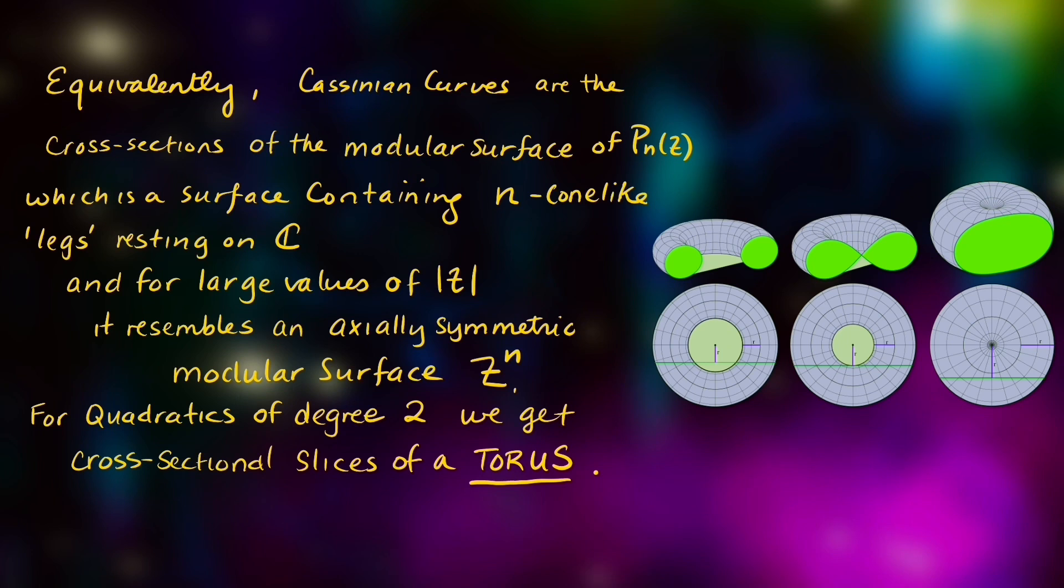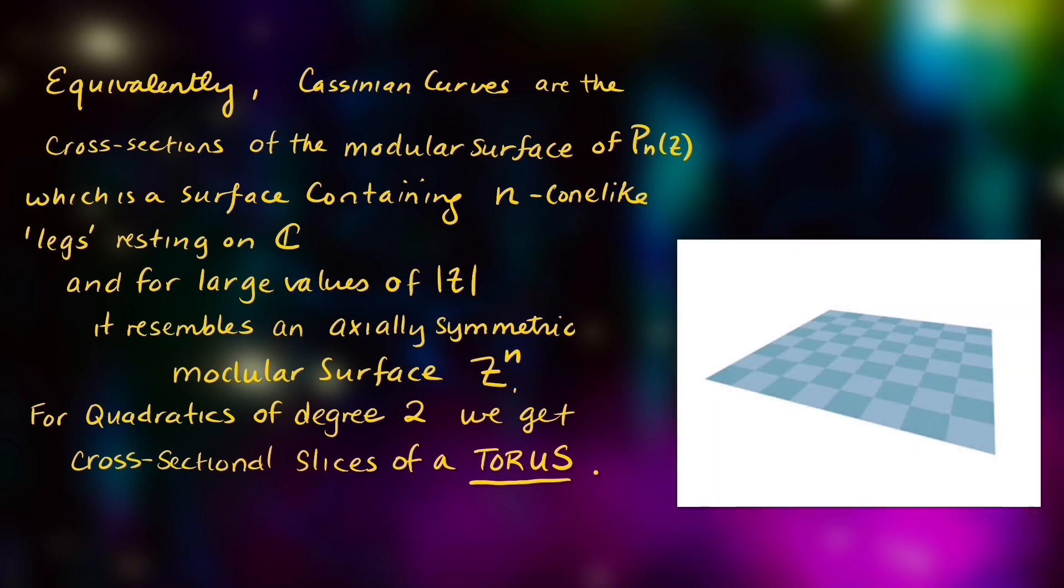Equivalently, Cassinian curves are the cross-sections of modular surfaces p of z, which is a surface containing n cone-like legs resting on the complex plane, and for large values of z it resembles an axial-symmetric modular surface z to the nth power.